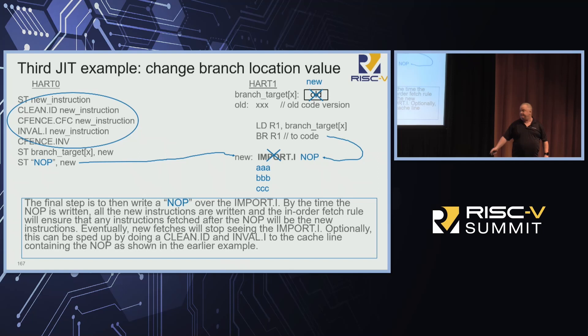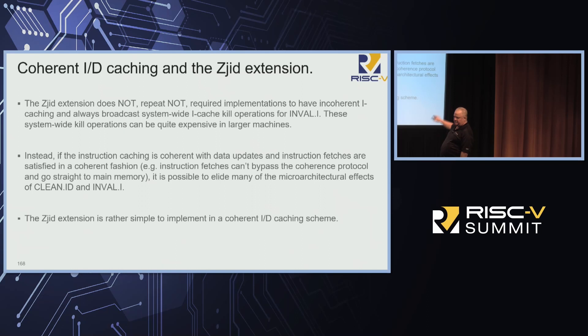You set these buffers up at the beginning of time with import.I's in them. The import.I's catch the edge cases where you're just changing the code and fix them, and then once you've got the code delivered you can erase the NOP because you don't need it anymore. Last point: coherent ID caching.